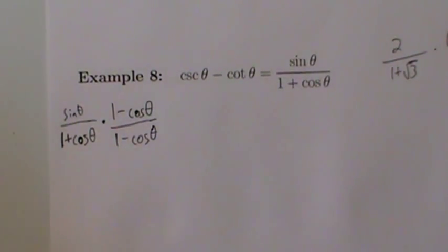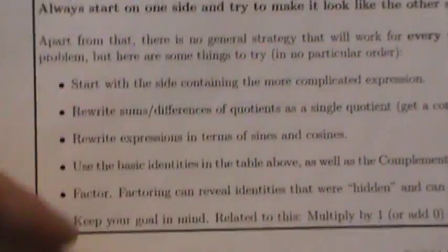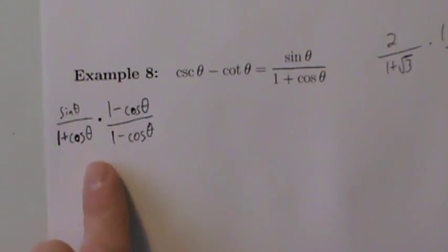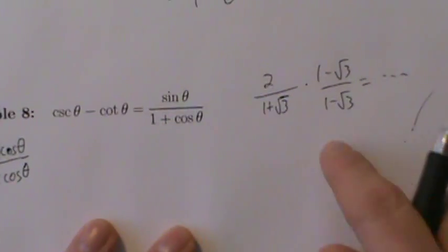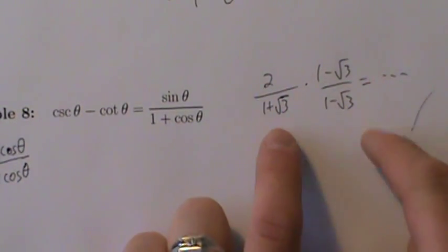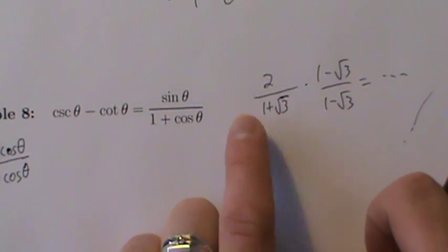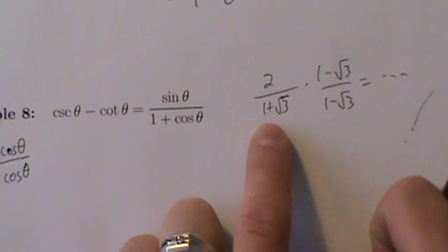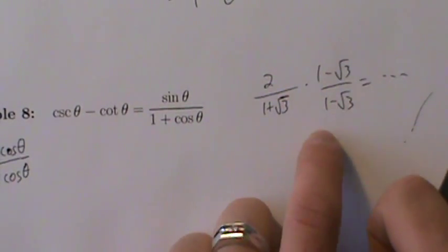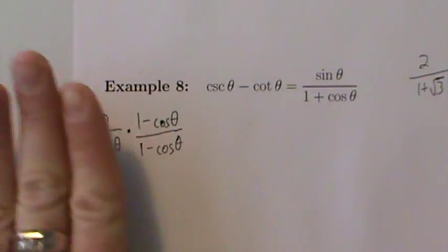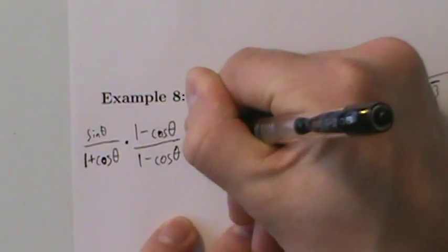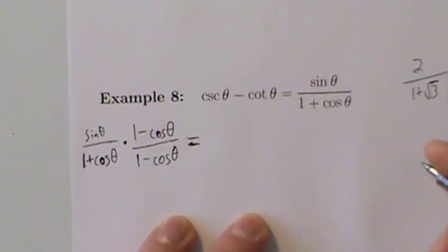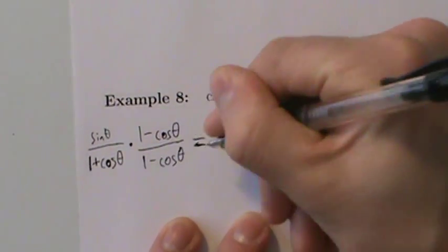Technically we're not rationalizing here because these are trig functions, not irrational numbers — the term doesn't strictly apply. But it's the exact same mathematical principle: we have something divided by 1 plus a trig function, so let's try multiplying by 1 minus that trig function and see if it works.